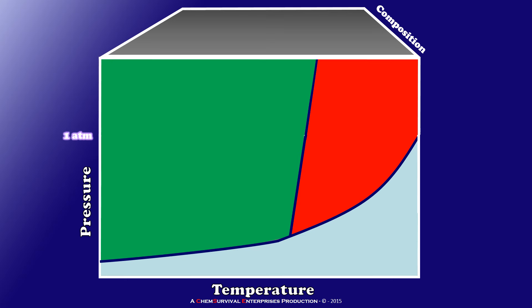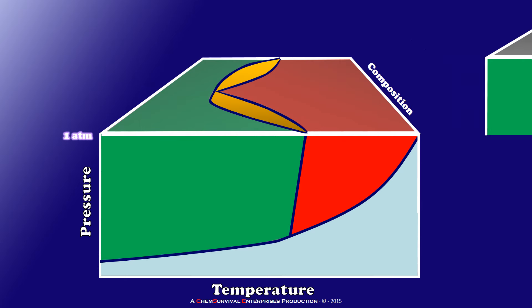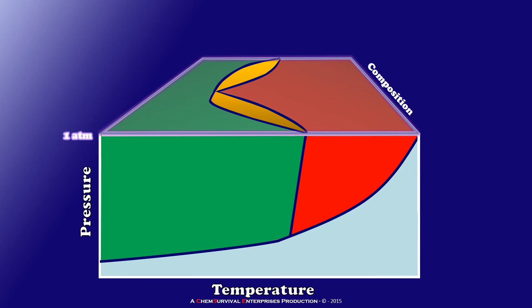Now I can simply slice through my new diagram at that pressure, and when I do this I create a face which now has composition and temperature axes at one atmosphere of pressure. And the phase diagram looks quite different than what we're used to seeing for pure compounds.